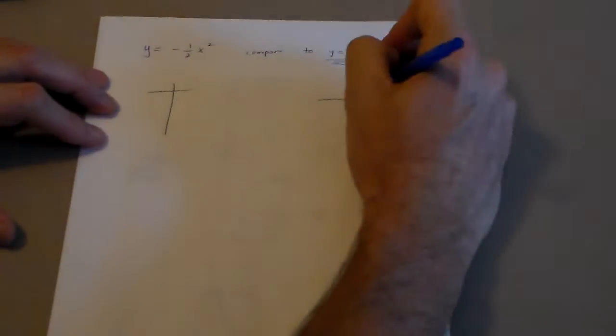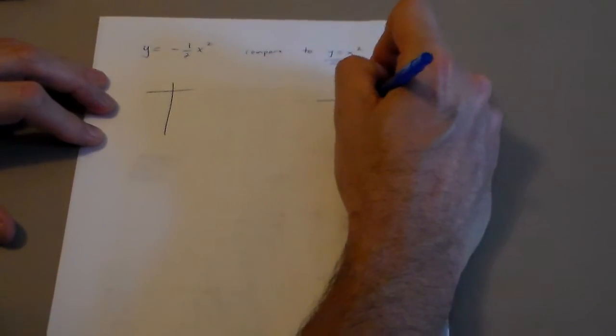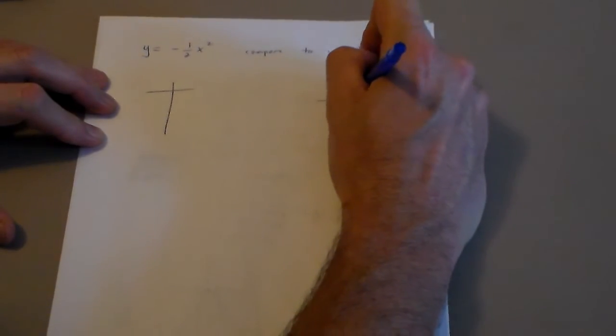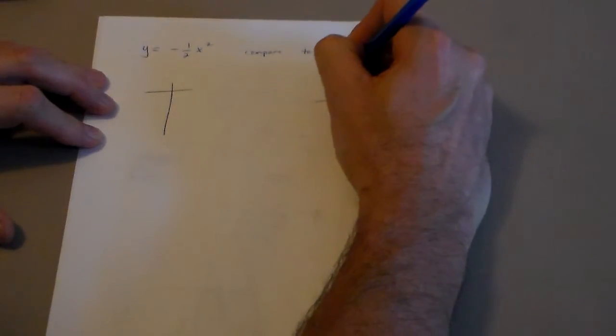We've done it a bunch of times already. You guys are like, yeah, I know that. 1, 1, 1, 1. So we're here, we're here, and so on, okay? So there's y equals x squared.